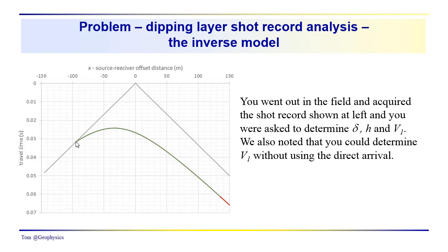We can also see that the reflection event terminates against the direct arrival at the surface. So that kind of tells us also where the dip is. We aren't really concerned with the refraction data, so I've just shown the very start of this critically refracted event. And you were left with the problem of taking this data, analyzing it, and determining the dip, the thickness of the layer, and the velocity in the upper layer, the reflecting layer.